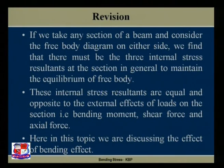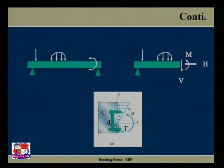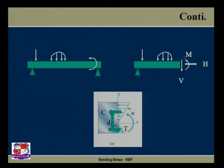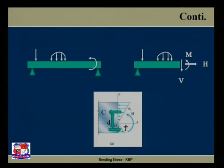In this chapter we are discussing the effect of bending moment. Refer to the figure of a simply supported beam subjected to external loading. If we take a cross section and divide the beam into left and right parts, the three internal resisting forces developed are: V (shear force), bending moment, and H (axial force). This bending moment develops equal and opposite forces at a particular section in terms of compressive force and tensile force, and these forces develop what are known as bending stresses.